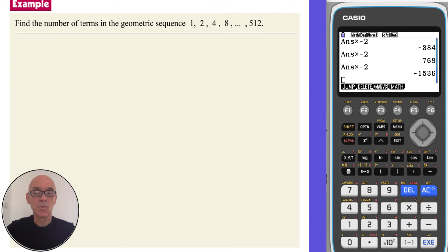In this question we're given a geometric sequence and we're asked to work backwards and find the number of terms in the sequence. We start by stating the first term, so u1 is 1, and then calculate the common ratio by dividing successive terms. You could divide the second term by the first term or the third term by the second term or the fourth term by the third term, giving a common ratio of 2.